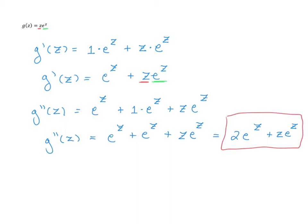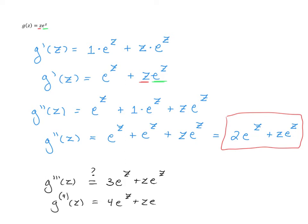If you want to think ahead, you could ask about the third or fourth derivative. For the fourth derivative, you could put a 4 in the exponent to indicate you're taking the fourth derivative. I'm noticing that taking the second derivative gave us the same form but with 2e to the z. I'm wondering — not proving this — but if I do it again, will I get 3e to the z plus ze to the z? Or four times gives 4e to the z plus ze to the z? Could you generalize to the nth derivative being n times e to the z plus z times e to the z? Something to think about.